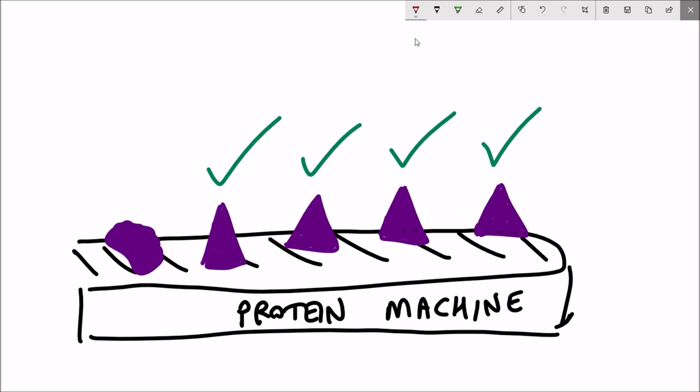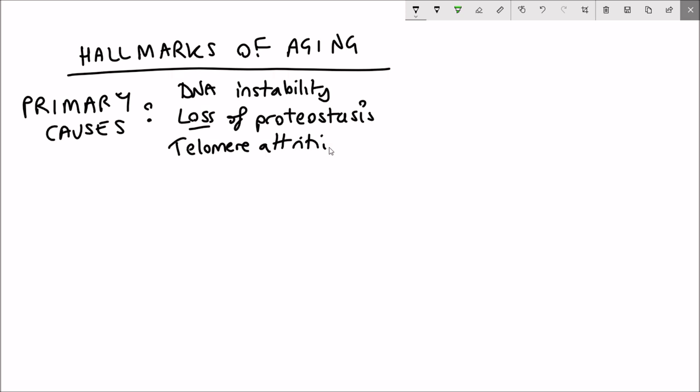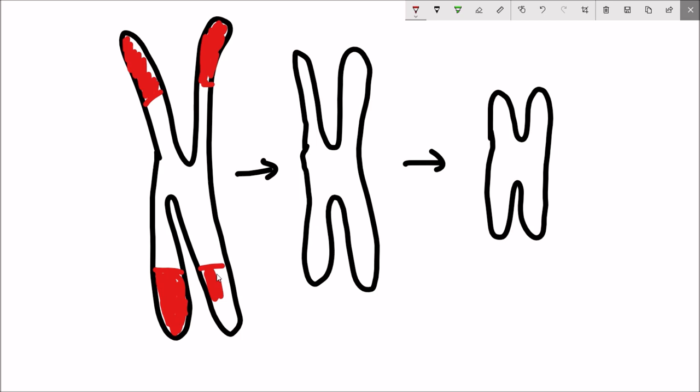Next up is telomere attrition. Telomeres are often explained as being the shoe caps on chromosomes that maintain the integrity of a chromosome. However, over time the telomeres shorten and so this integrity gets lost.